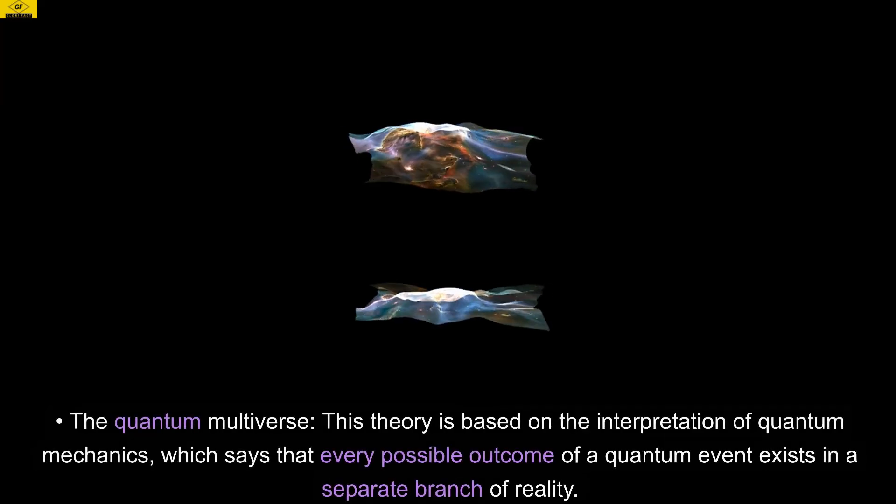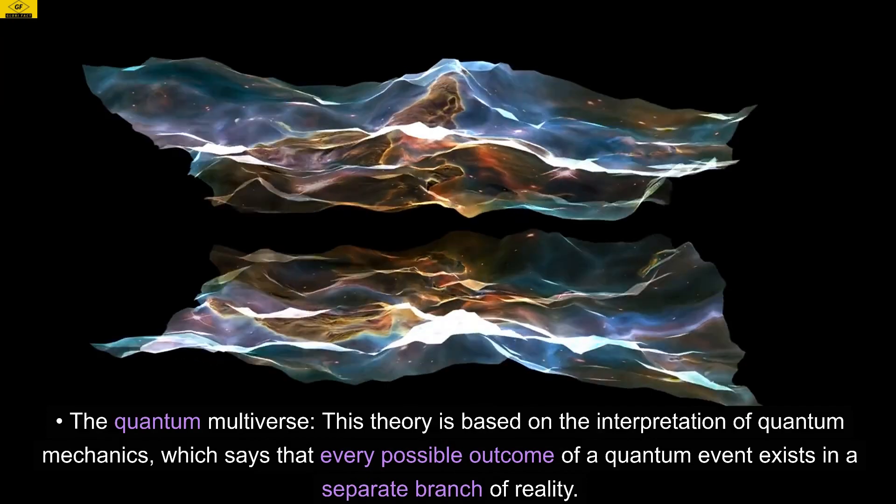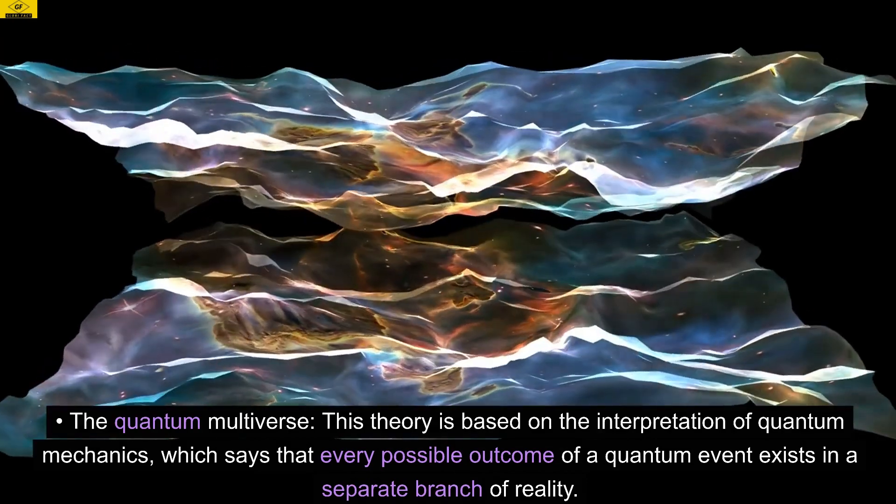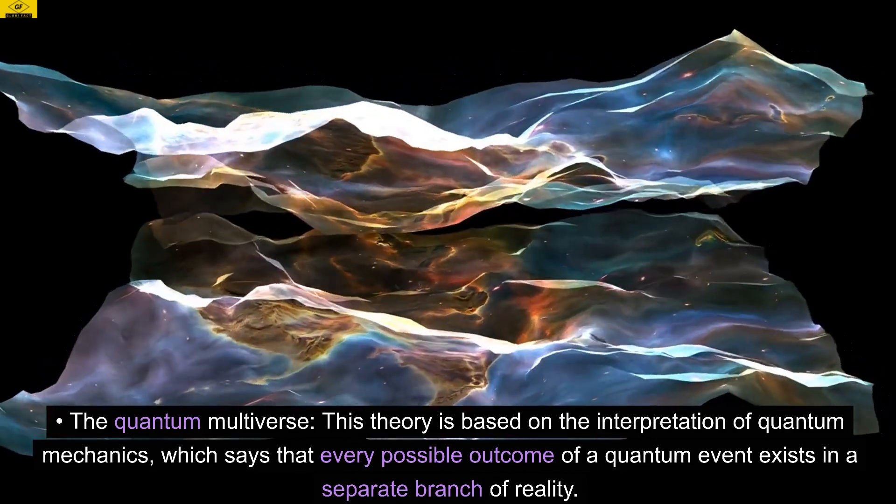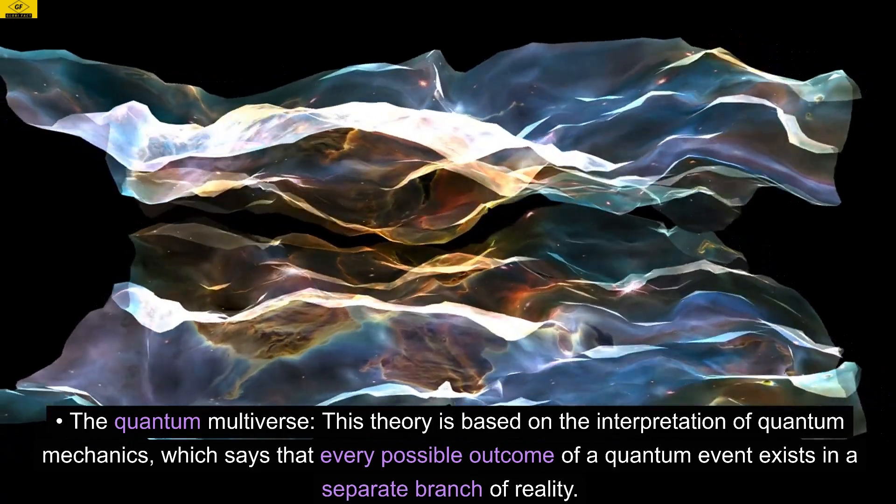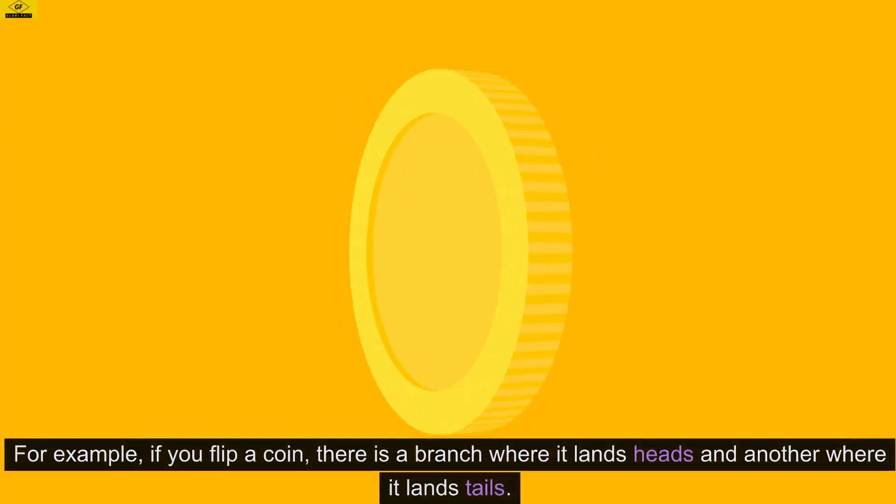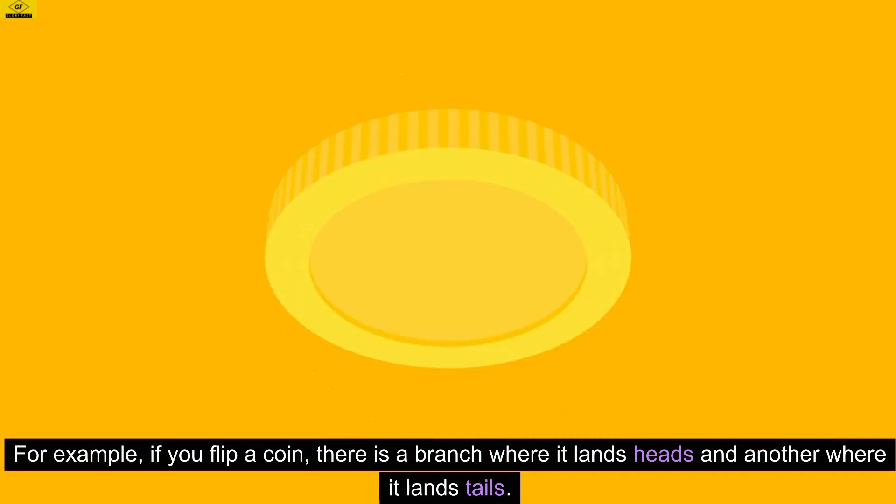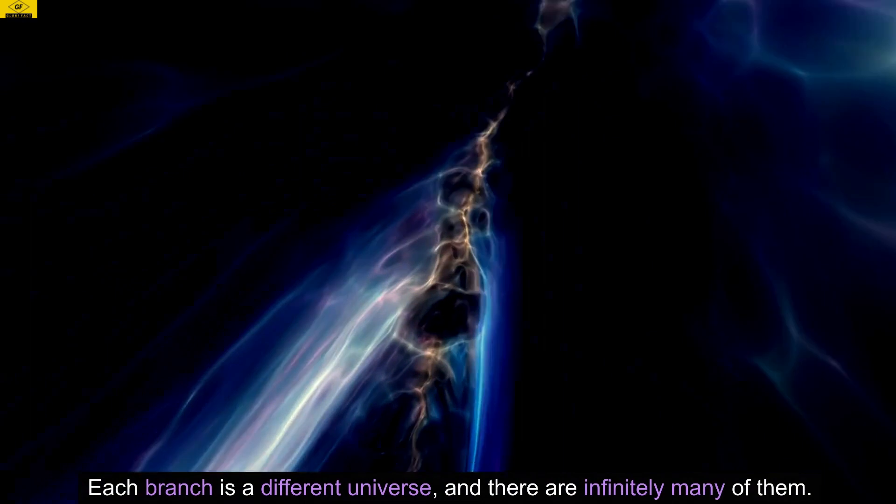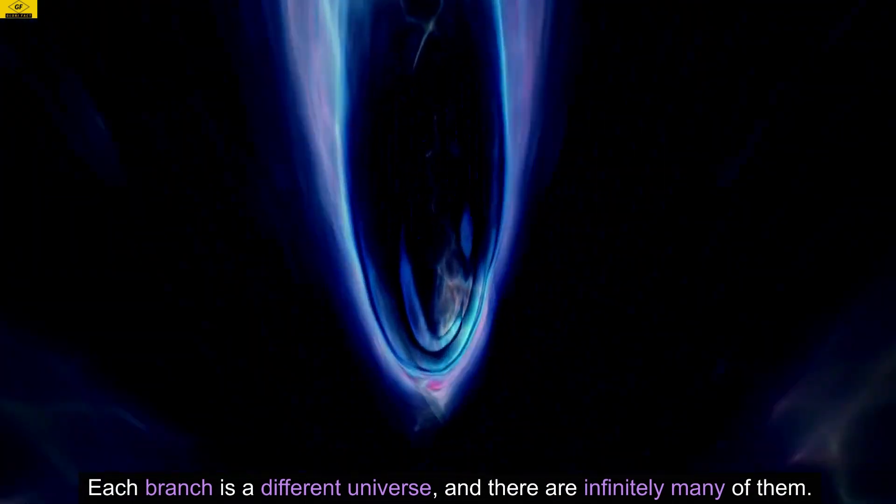The quantum multiverse. This theory is based on the interpretation of quantum mechanics, which says that every possible outcome of a quantum event exists in a separate branch of reality. For example, if you flip a coin, there is a branch where it lands heads and another where it lands tails. Each branch is a different universe, and there are infinitely many of them.